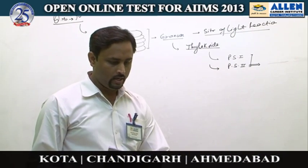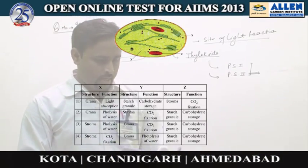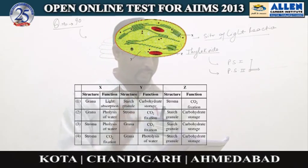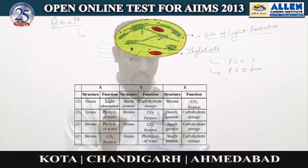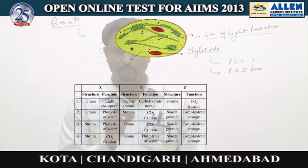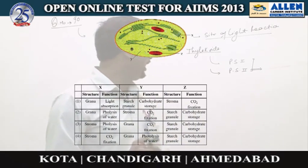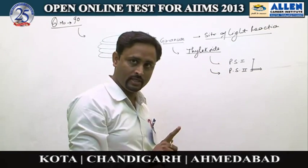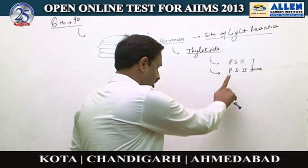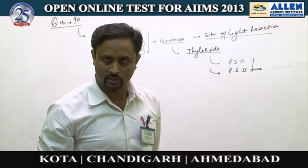Question number 19, the answer is 2. X represents grana, and grana helps in photolysis of water. Because in grana, PS1 and PS2 are present, and PS2 is actually responsible for photolysis of water.